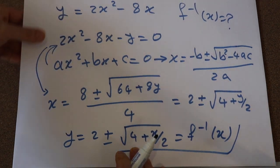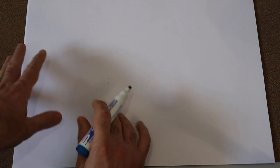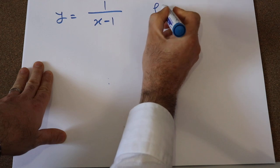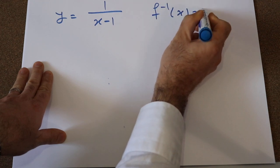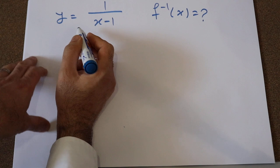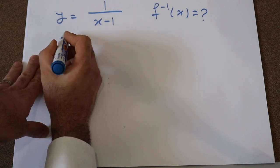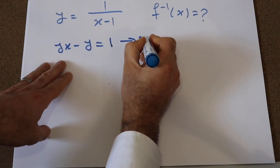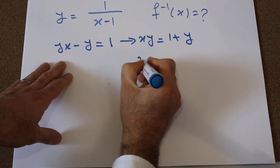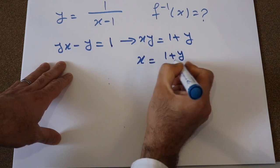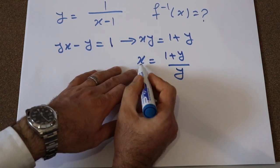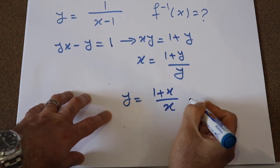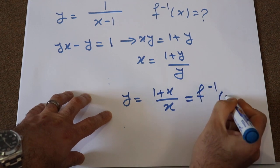Let me solve one more example — the last one. If y is defined as 1 divided by (x minus 1), calculate the inverse of this function. Again, express x as a function of y: multiply y by (x minus 1), giving yx minus y equals 1. Therefore xy equals 1 plus y, so x equals (1 plus y) divided by y. Then change x to y and y to x, giving y equals (1 plus x) divided by x, and that is the inverse of the function.